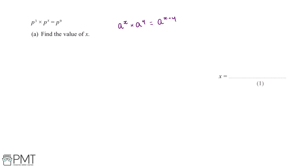We can apply this principle to this question. Using this rule, P to the power of 3 multiplied by P to the power of x will give us P to the power of 3 plus x. So P to the power of 3 plus x is equal to P to the power of 9.